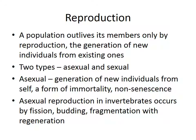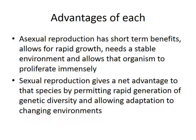Asexual reproduction in invertebrates occurs by three different methods: fission, budding, and fragmentation with regeneration. We're going to look at those.